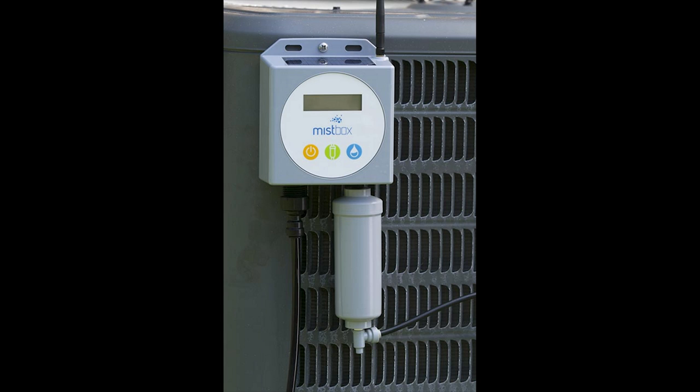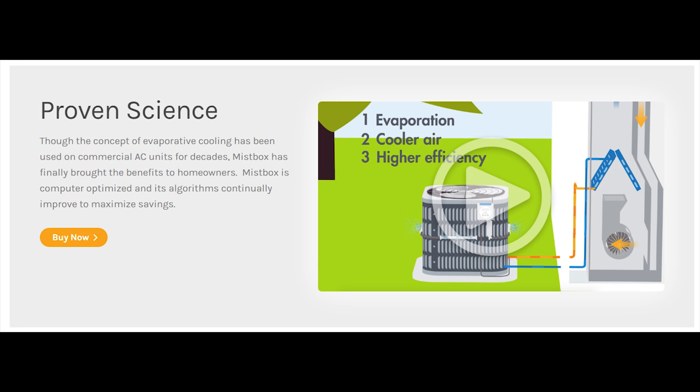So let's talk about how it works. Basically the way Mistbox works is it's using evaporative cooling. It's going to spray a mist around your AC unit so that the air going into your AC unit on the outside of your house is cooler than the ambient temperature. You've probably experienced this before if you live anywhere where it gets hot during the summer. You've probably been to a place, a park or amusement park, where they have a misting station.